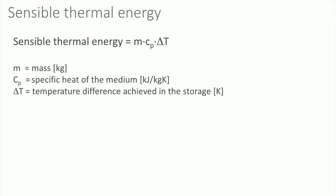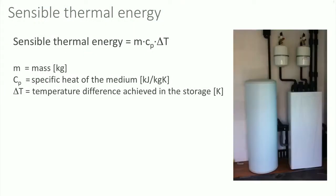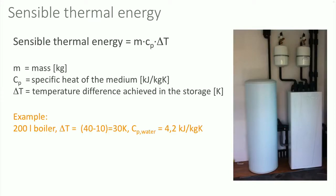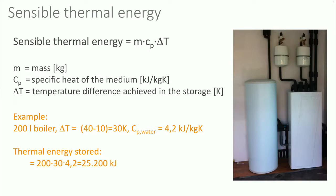As an example, the thermal energy stored in a hot water buffer is shown. The boiler has a volume of 200 liters and the temperature is raised with 30 degrees Celsius. The specific heat capacity of water is 4.2 kJ per kg·K. The thermal energy stored is thus 200 times 4.2, which equals 25,200 kJ. If you divide this value by 3600, you will get the energy content in the unit kWh, resulting in a value of 7 kWh of thermal energy stored. This is enough for taking 7 showers of 5 minutes.